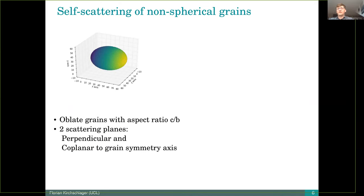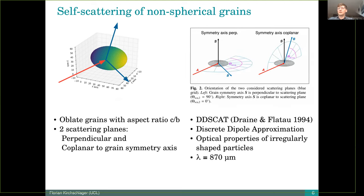When we want to investigate now the self-scattering of non-spherical grains, we take an oblate dust grain with a certain ratio of the axis and irradiate the dust grain, and we have to consider then two different scattering planes. The first one is perpendicular to the grain axis, and the second one is coplanar to the grain symmetry axis. We use these two scattering planes to investigate the self-scattering effect, and we use the code DDSCAT by Bruce Draine, which is based on the discrete dipole approximation to calculate the optical properties of the grains, and we focus at the beginning on a wavelength of 870 micrometer.